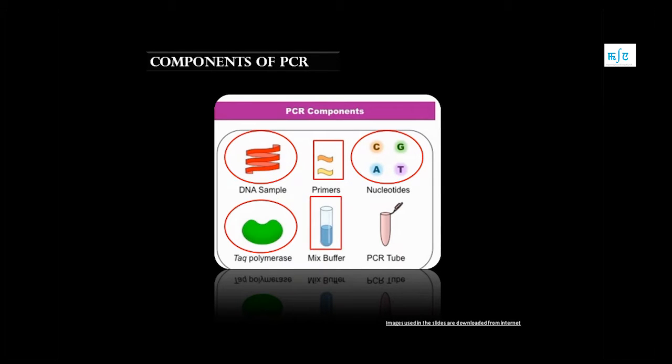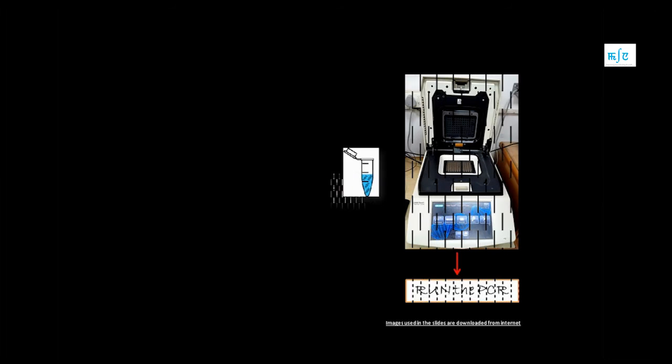And then all the components will be mixed in a proper mixing buffer to maintain the proper pH. And after all these components are mixed, they will be put in a PCR tube like this, and this tube will be put inside a PCR machine like this.